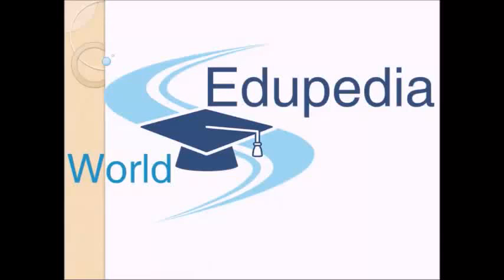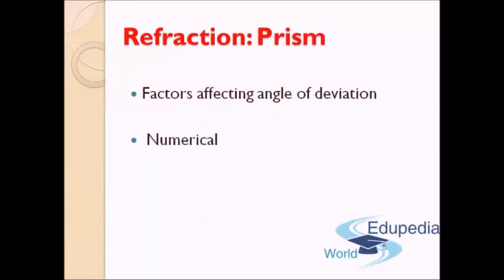Welcome back to Eripedia World. Last lecture we discussed about prism and we saw the relation between angle of incidence, angle of emergence, the angle of prism and the deviation caused by the prism. Today we will see closely the factors which affect the angle of deviation. We will have a discussion about them, and then we will close the lecture by going through a numerical about the angle of deviation. So let's start with today's lecture.